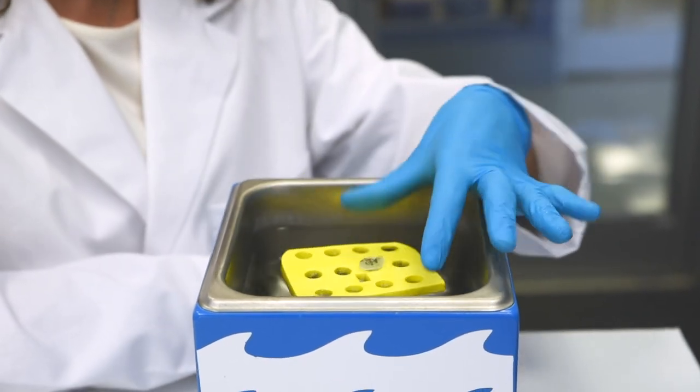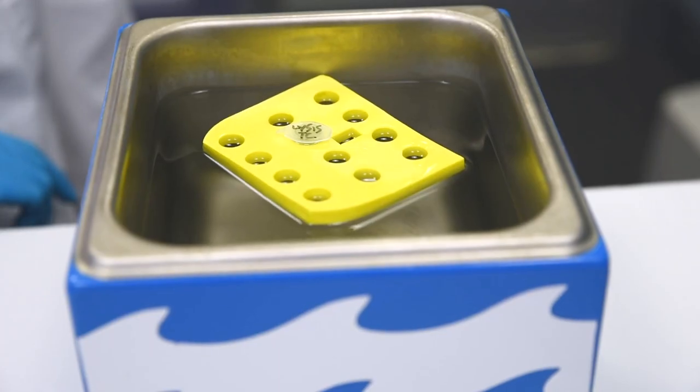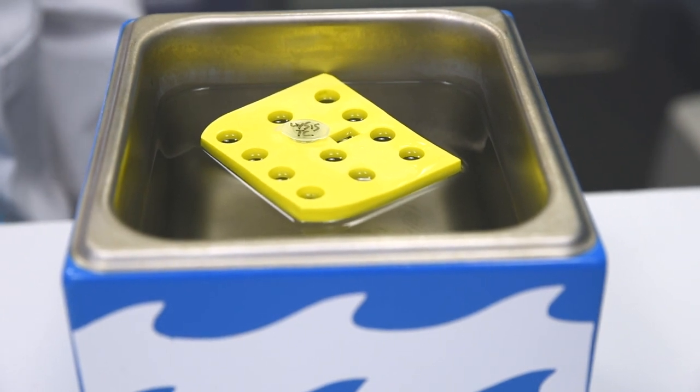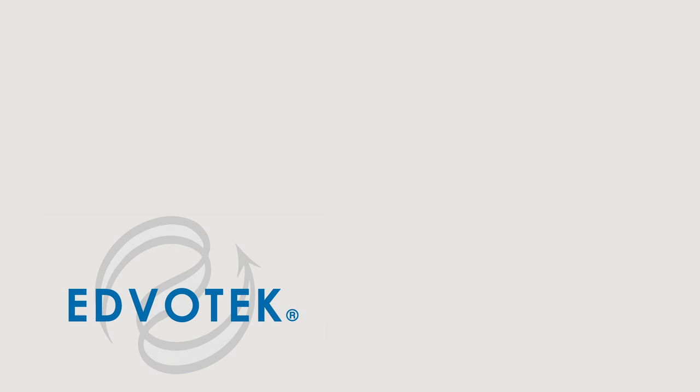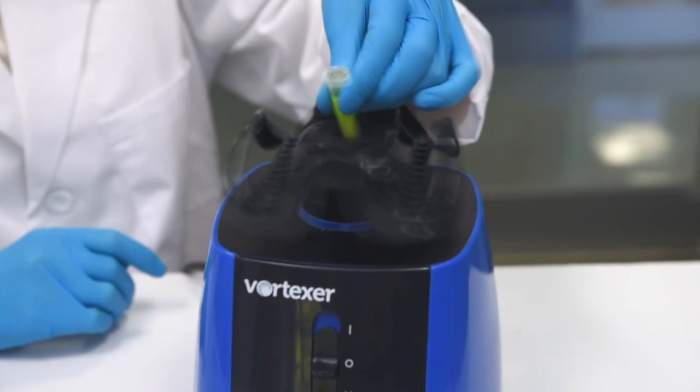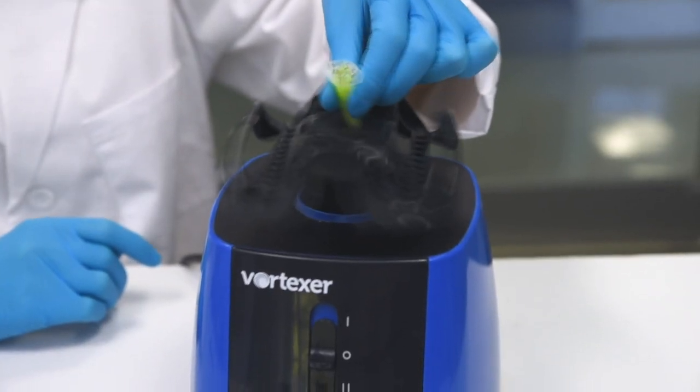Step 7: After the cell suspension is completely frozen, remove the microcentrifuge tube from the freezer and float it in a 37 degrees Celsius water bath to thaw the cells. Step 8: Vortex the samples vigorously for 30 seconds.